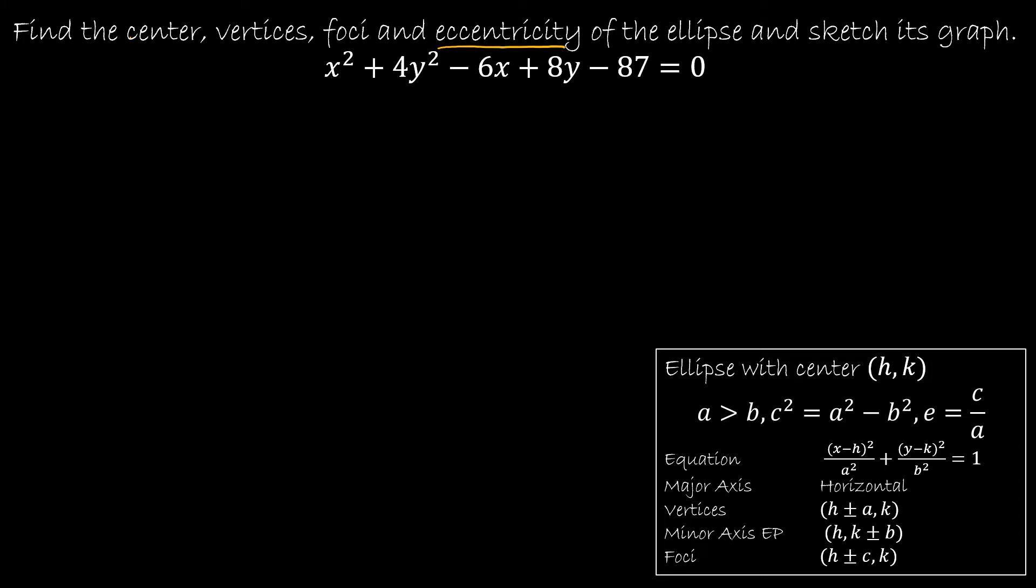The ovalness, which means the closer that value gets to zero, the closer your ellipse will look like a circle. And it won't become zero, obviously. But the closer that value gets to one, the more smooshed your ellipse will be, or your circle will get more and more squished, making it look more elliptical. So let's go ahead and do an example.